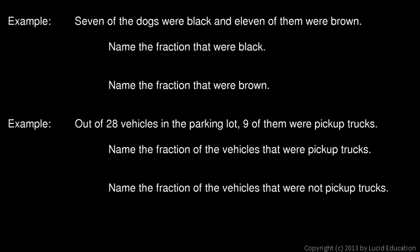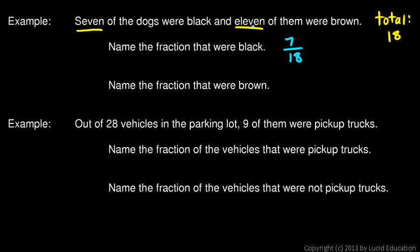We don't always need a picture. For example: seven dogs were black and eleven were brown, for a total of eighteen. The fraction that were black is seven out of eighteen — not seven over eleven. The fraction that were brown is eleven out of eighteen.